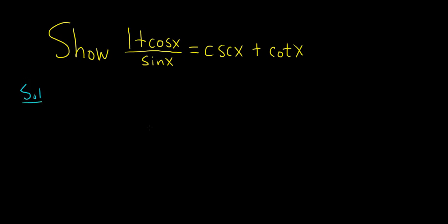We'll start by using the more complicated side. So let's start by writing down the left hand side: 1 plus cosine x over sine x.